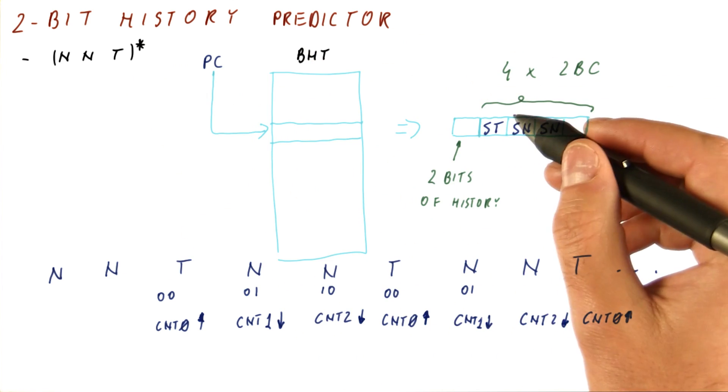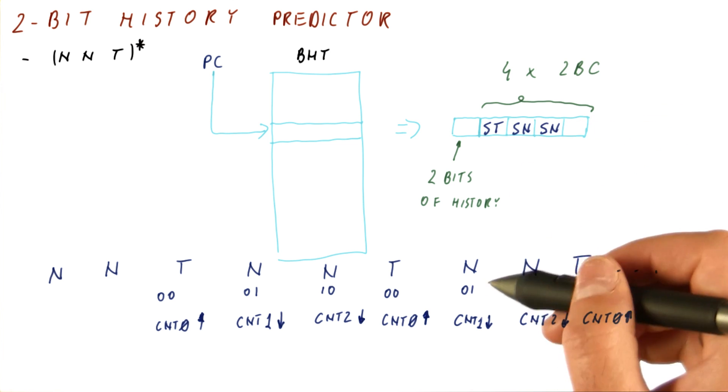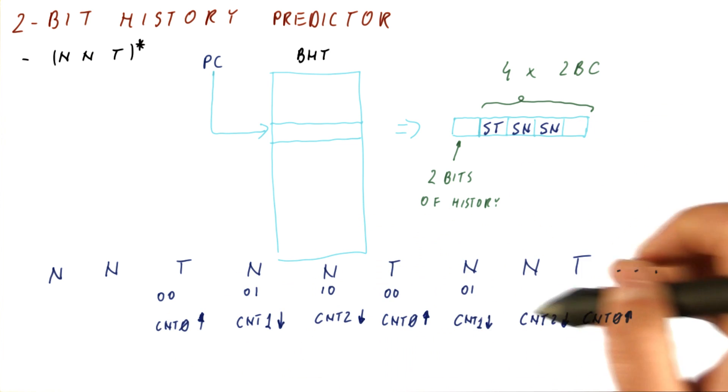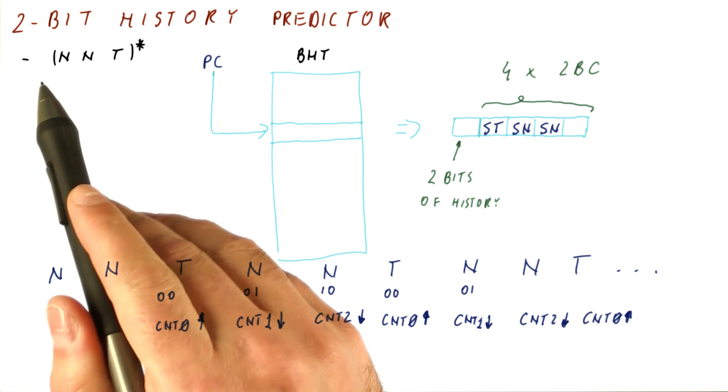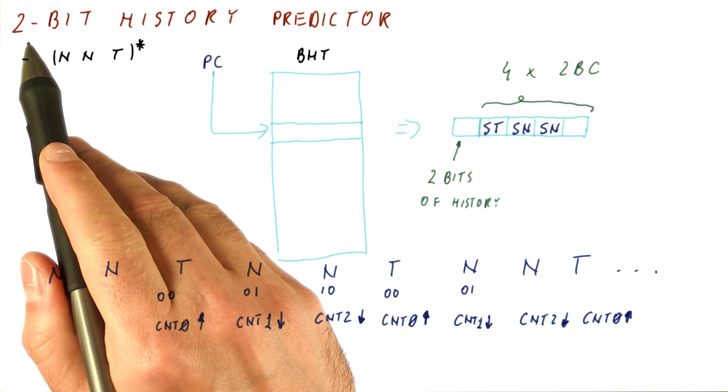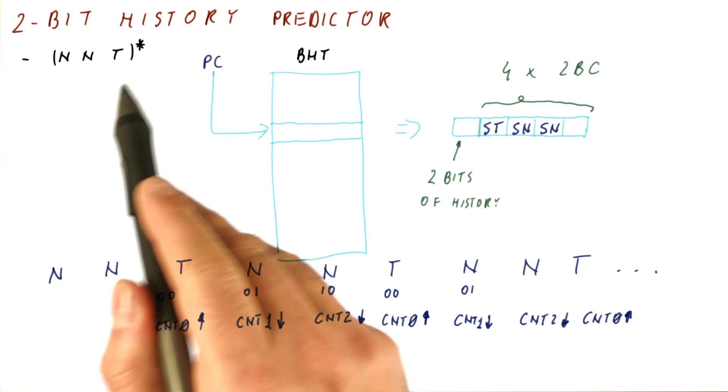So as you can see, this predictor starts being a perfect predictor after a while, after these counters have been appropriately modified depending on their starting state. So unlike a single bit history predictor, a two-bit history can predict this pattern accurately.